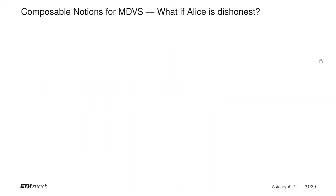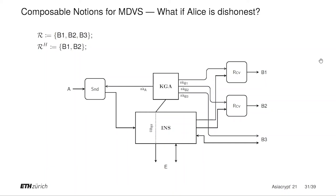Finally, let's consider the case where Alice is dishonest. In the real world, if Alice is dishonest, she no longer runs a send converter. Furthermore, every honest party also gets to learn Alice's secret key SK_A. This means, in particular, that Bob3 now receives his own secret key and Alice's secret key; Eve also receives Bob3's secret key and Alice's secret key; and Alice, in addition to her own secret key, also receives Bob3's secret key.